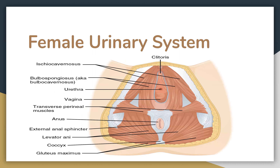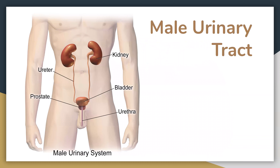Here is the female urinary system. You have the urethra and the ureter, which you cannot see here, but it does also involve the ureter. In the male urinary tract, you can see that the ureters come from the kidneys, going into the bladder, and you have the urethra that allows fluids to exit from the body.